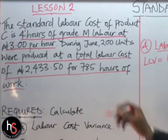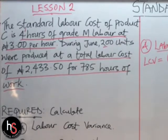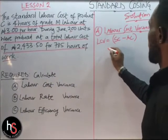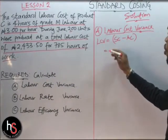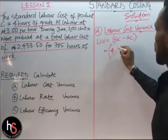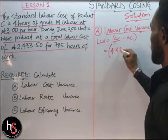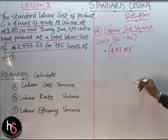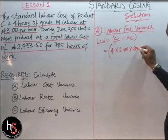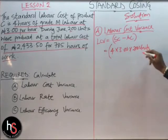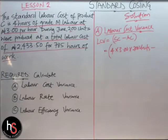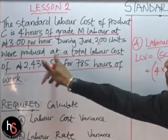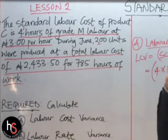To get our standard cost, we multiply 4 hours by 3 Naira per hour by 200 units. So our labor cost variance equals 4 times 3 Naira per hour times 200 units, minus the actual cost. The actual cost is the total labor cost of 2,433.50 Naira.